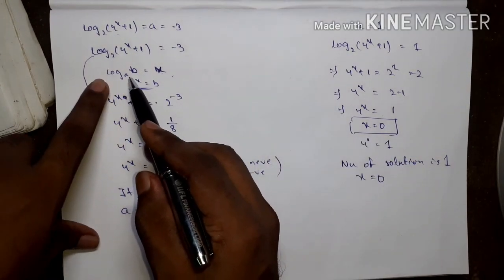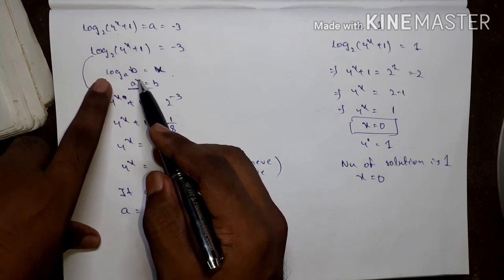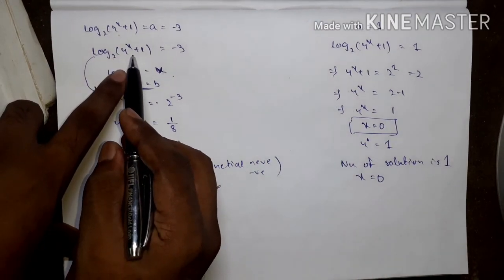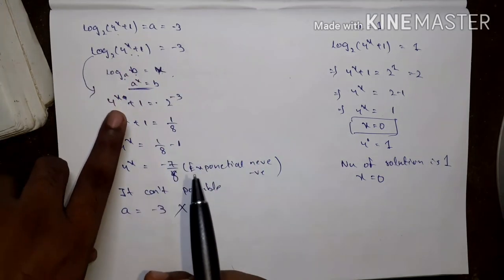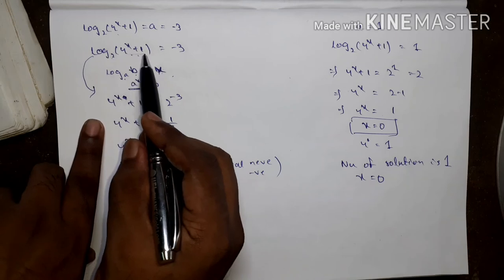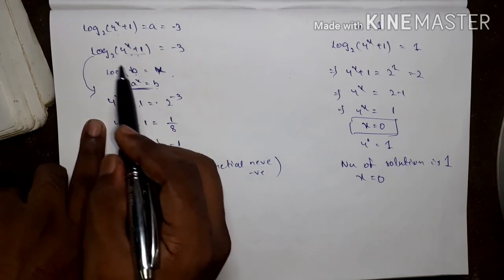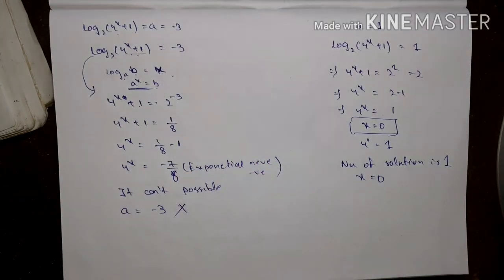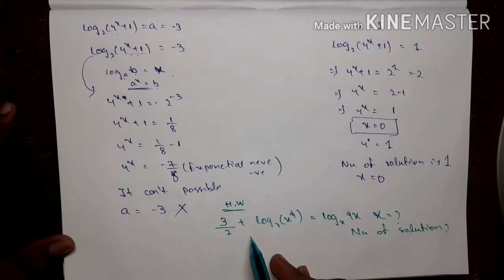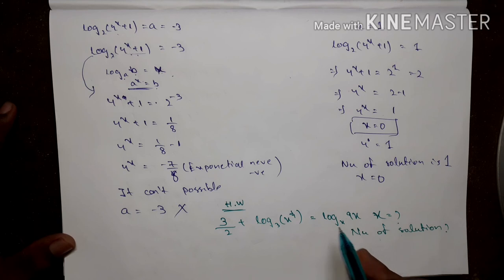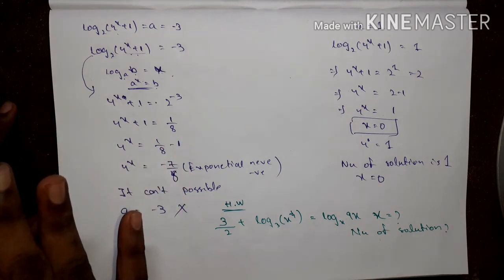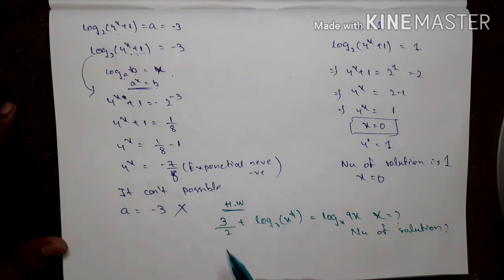To recap: log_X equals log_A B where A^X equals B. Here A equals 2, B equals 4^(x+1), X equals minus 3, so B equals 4^(x+1) equals 2^(-3). The next practice question for you is: 3/2 plus log_3(x^(1/4)) equals log_x(9x). Find the value of x and the number of solutions. Practice this with the previous concepts.